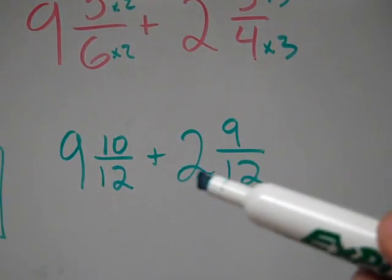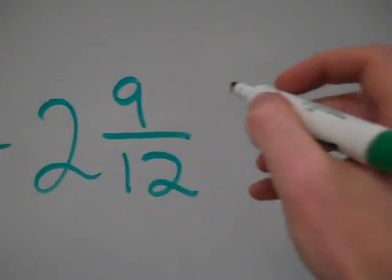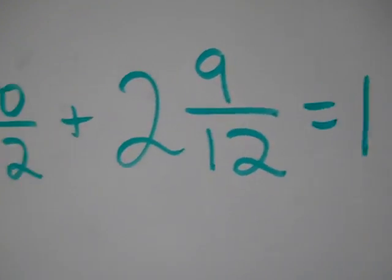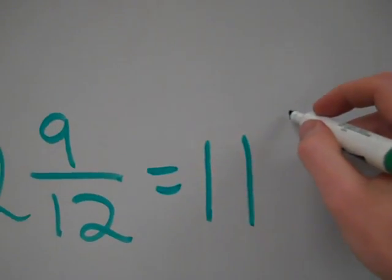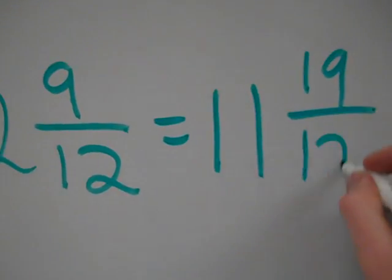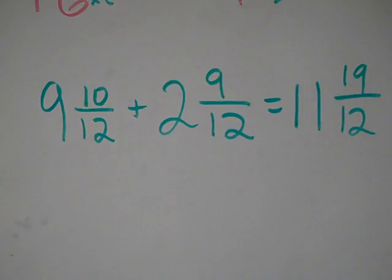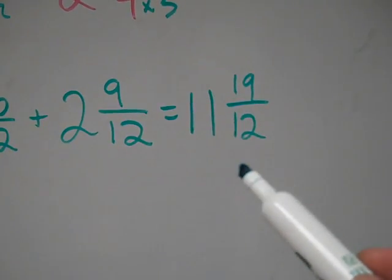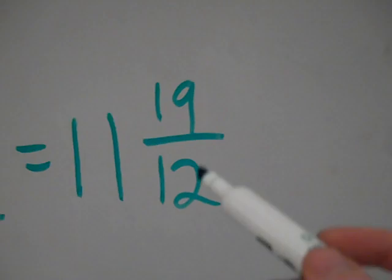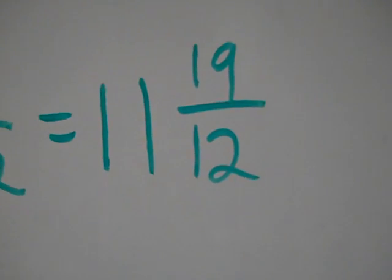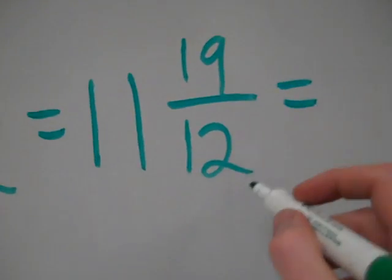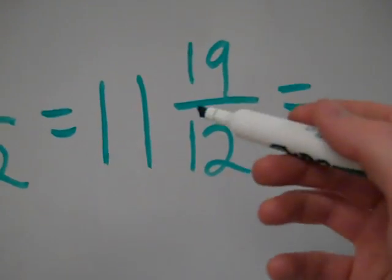So now I've rewritten the problem to give them equivalent fractions that have common denominators, and now I'm going to add my whole numbers just like I did last time. 9 plus 2 is 11, and then 10 plus 9 is 19, and of course those are in twelfths.